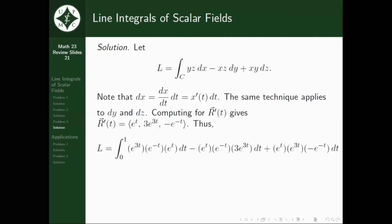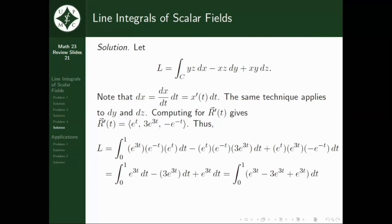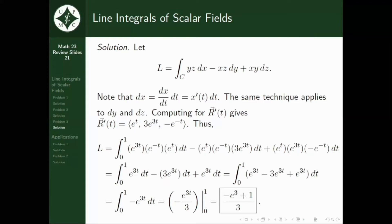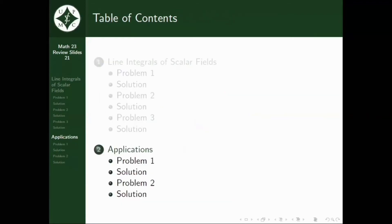Thus, the line integral L equals the integral from 0 to 1 of e^(3t) times e^(negative t) times e^t dt minus e^(negative t) times 3e^(3t) dt plus e^t times e^(3t) times negative e^(negative t) dt. Evaluating, L equals (negative e^(negative 1) plus 1) all over 3.